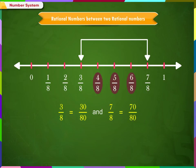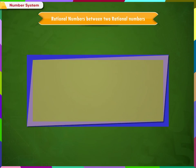The numbers 31/80, 32/80, 33/80 till 69/80 also fall between 3/8 and 7/8. 3/8 and 7/8 can also be written as 300/800.